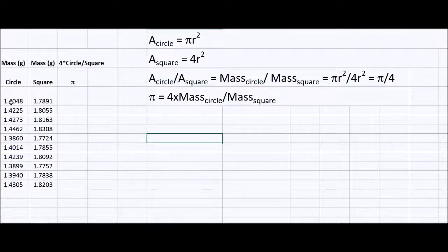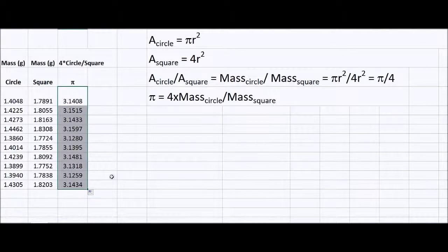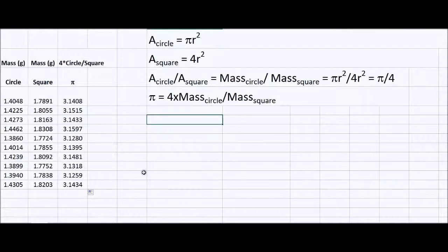So here are the 10 masses of the square. I'm going to calculate pi. It's equal to 4 times the mass of the circle divided by the mass of the square. And I'm going to do that for all 10. You can see they're all what you would expect for pi. So let's do a little descriptive statistics on this.